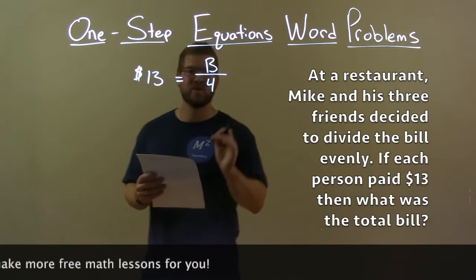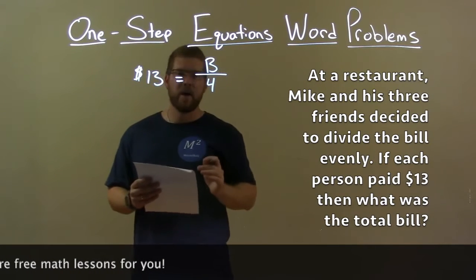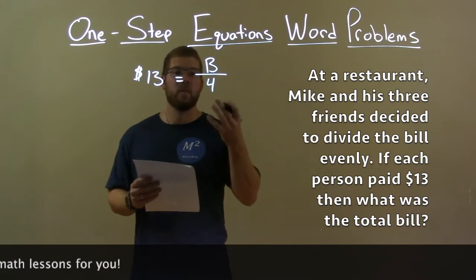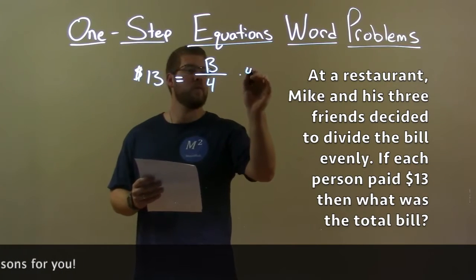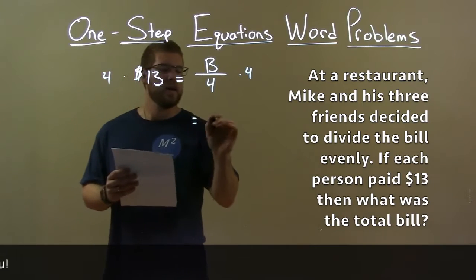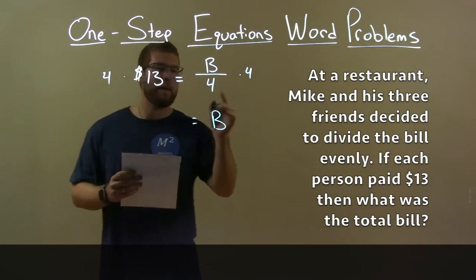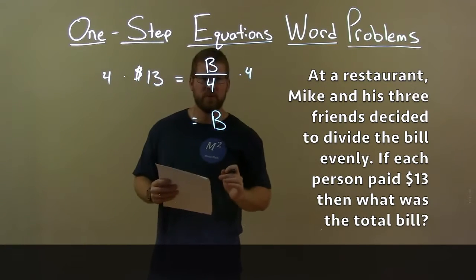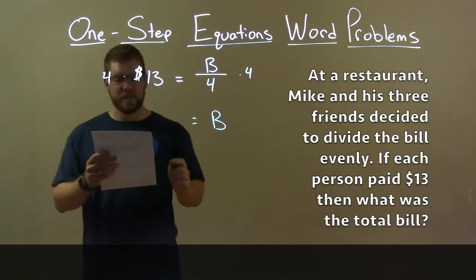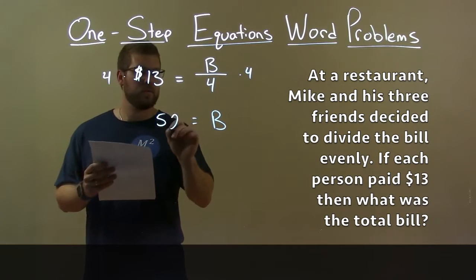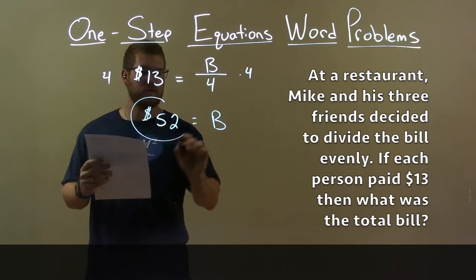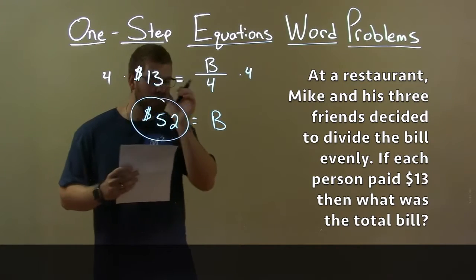Let's solve this. We're dividing by four, and the opposite of division is multiplication, so multiply both sides by four. This gives B by itself — the total bill. Four times 13 is 52, so our final answer is $52.